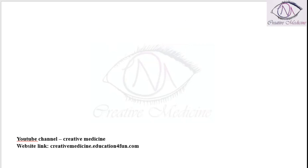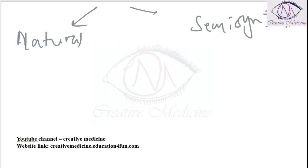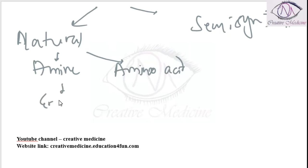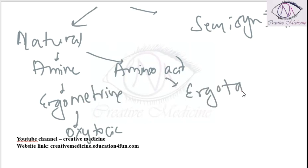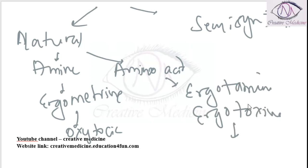Ergot alkaloid derivatives can be of two types: natural ergot alkaloids and semi-synthetic ergot alkaloids. Natural ergot alkaloids are either amine alkaloids or amino acid alkaloids. Amine alkaloids include ergometrine, which has an oxytocic-type action. Amino acid alkaloids include ergotamine and ergotoxin, which are vasoconstrictors with alpha-blocking properties.